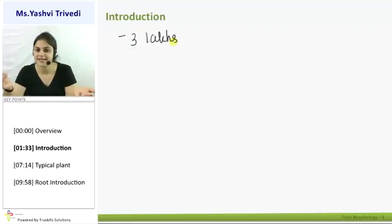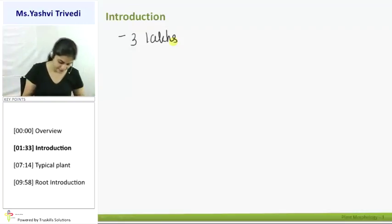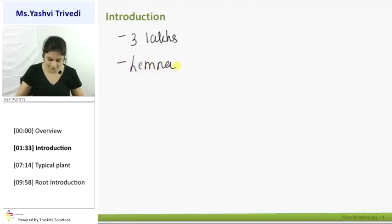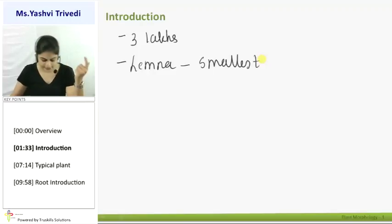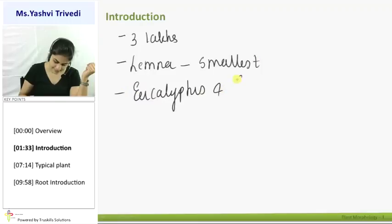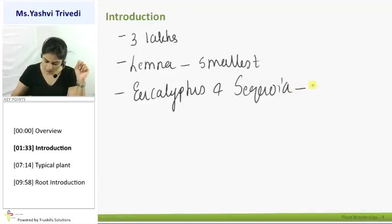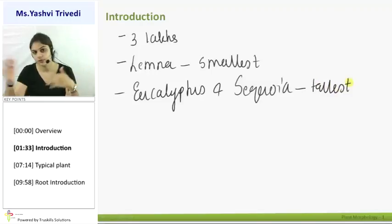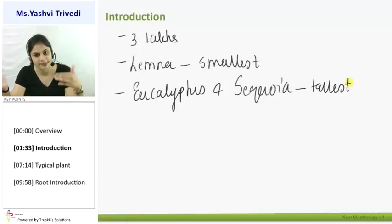Out of all these 3 lakh species, none of them are of the same type. They have different size, shape, structure, and life cycles — each plant is different from one another. For example, Lemna is the smallest aquatic plant on earth. On the contrary, Eucalyptus and Sequoia (full name: Sequoia sempervirens) are the tallest plants. All three are flowering plants included in the kingdom of Phanerogams, which means flower-bearing and seed-bearing plants.